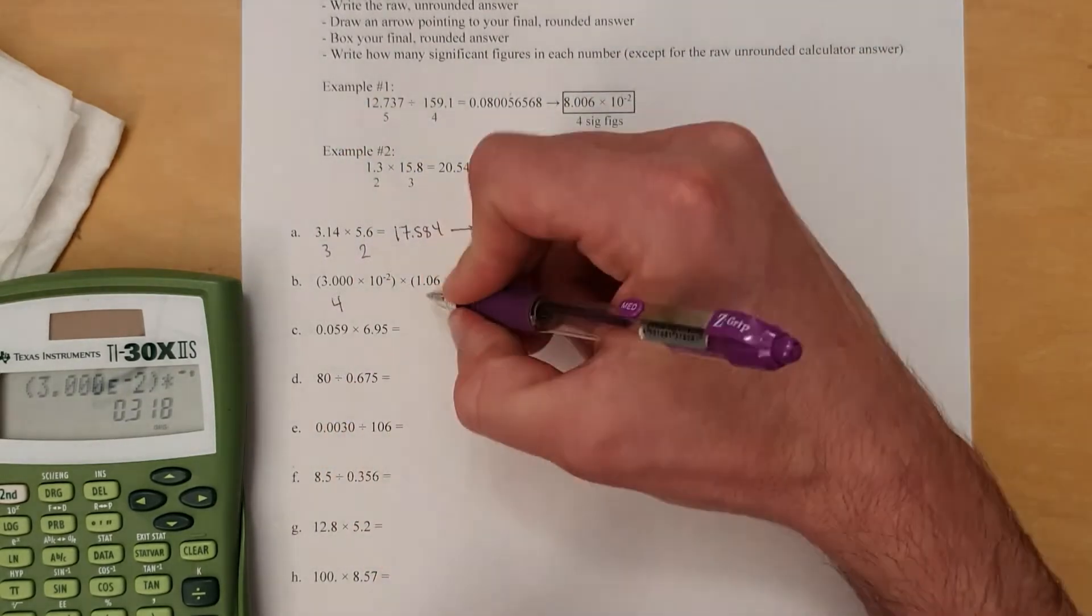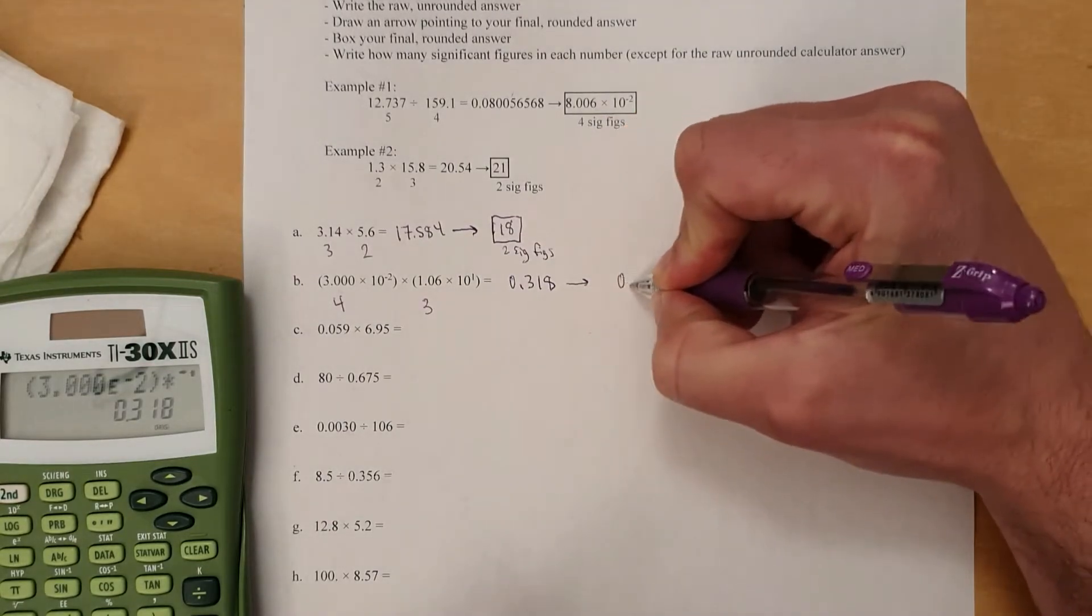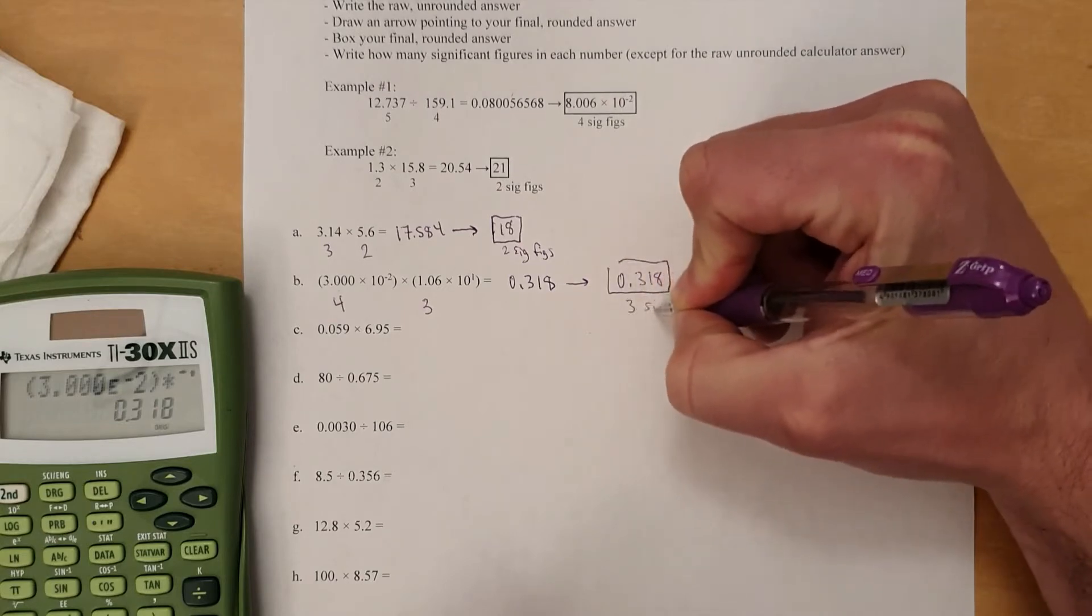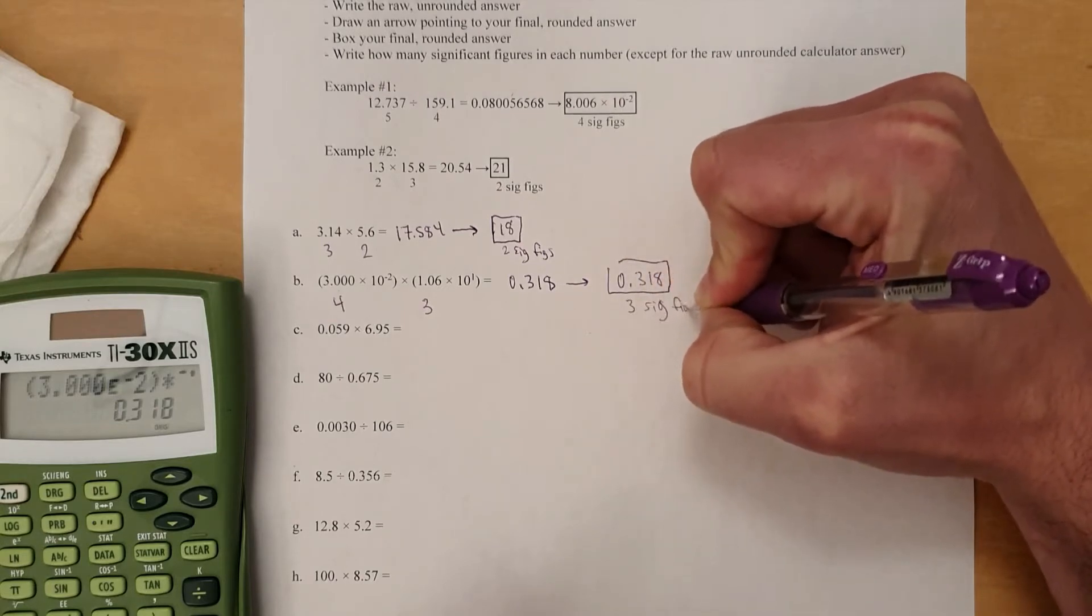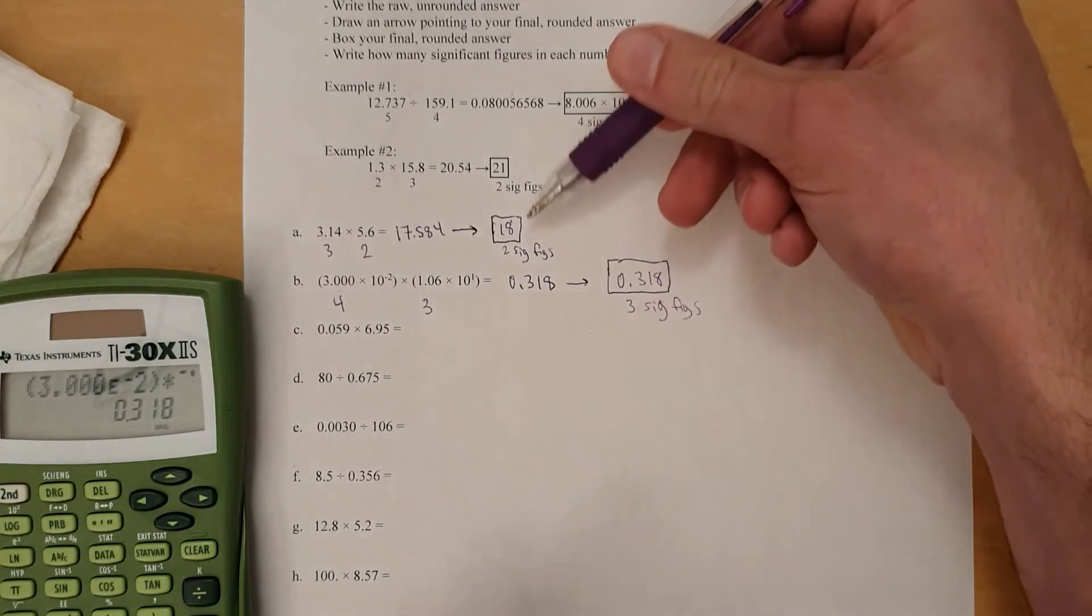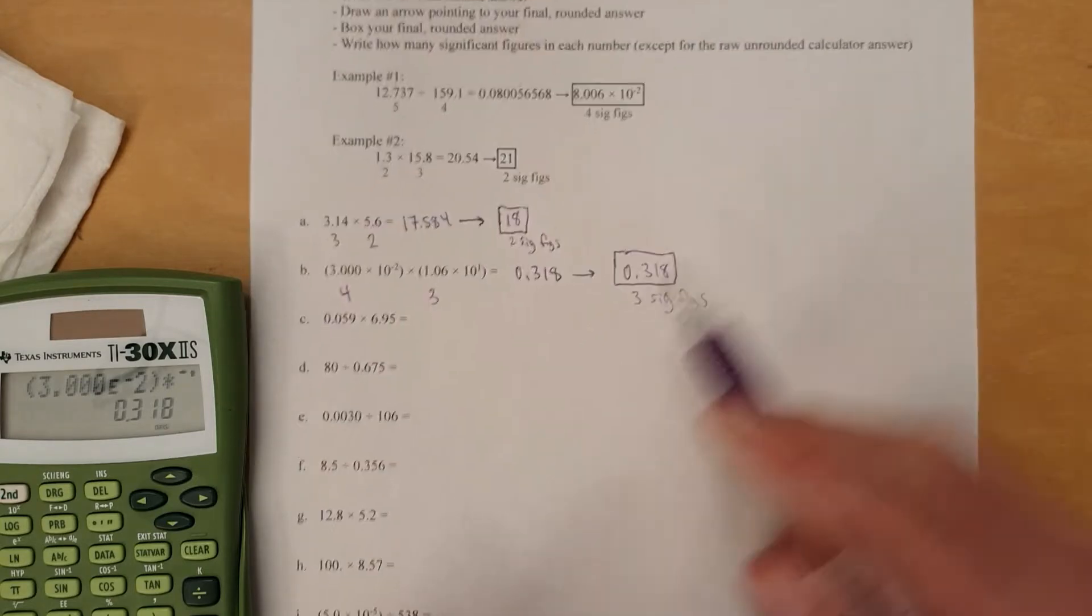Yes, that's 4 sig figs. This is 3 significant figures. So that means your final answer just actually stays the same. You don't need to change the rounding. So just because you round some calculator outputs doesn't mean you round it every single time. Sometimes your calculator gives you something that's just fine.